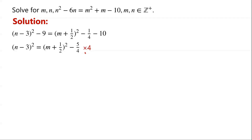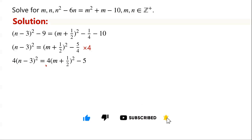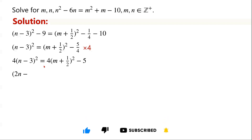Now we multiply the equation by 4. We can write 4 times (n minus 3) squared equals 4 times (m plus a half) squared minus 5. Note that 4 can be written as 2 squared.